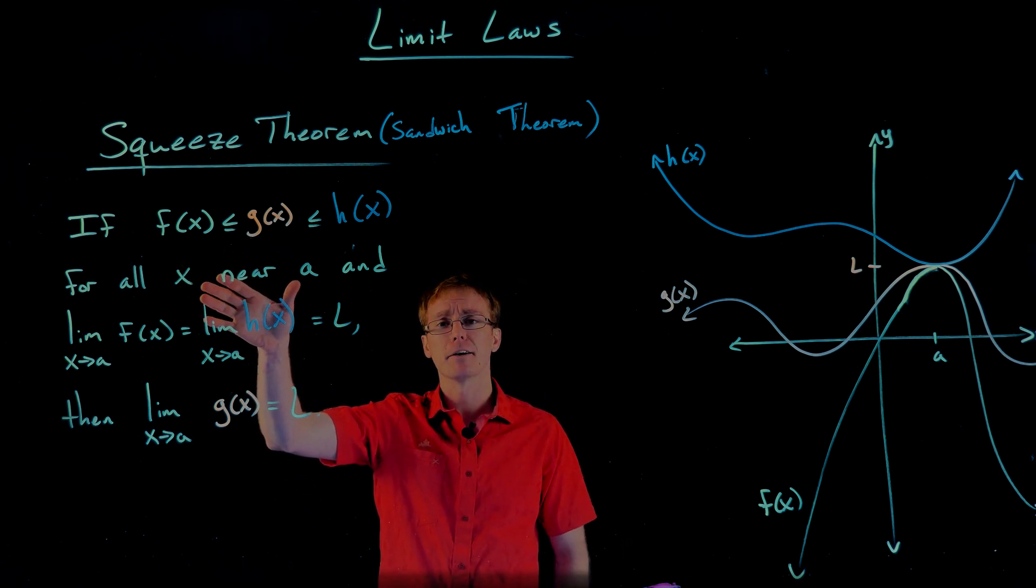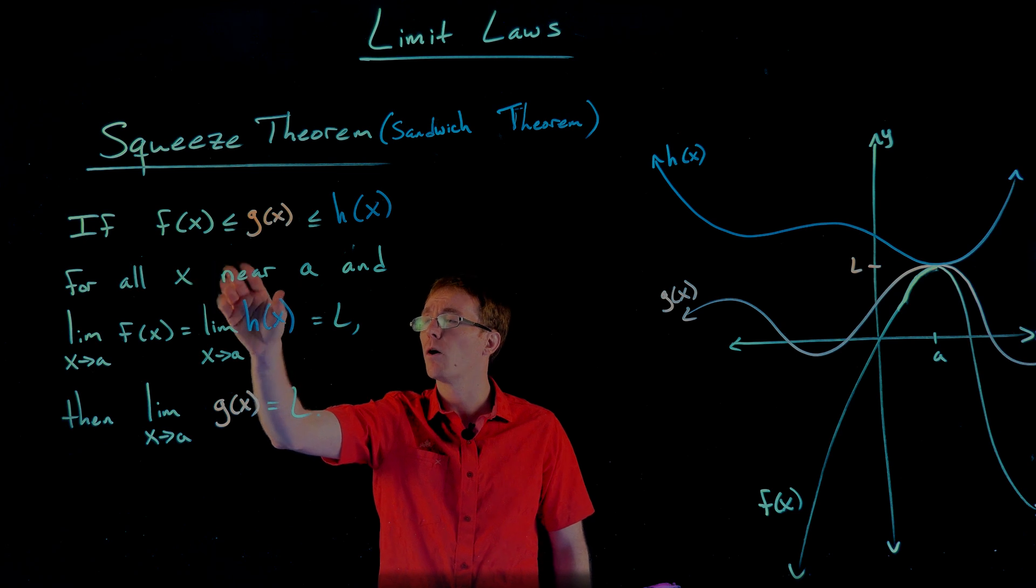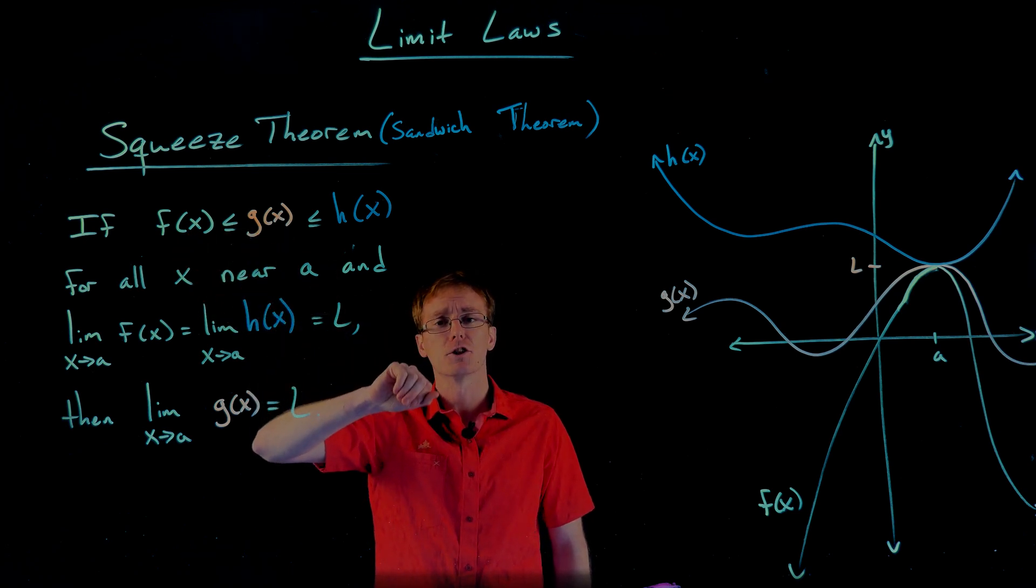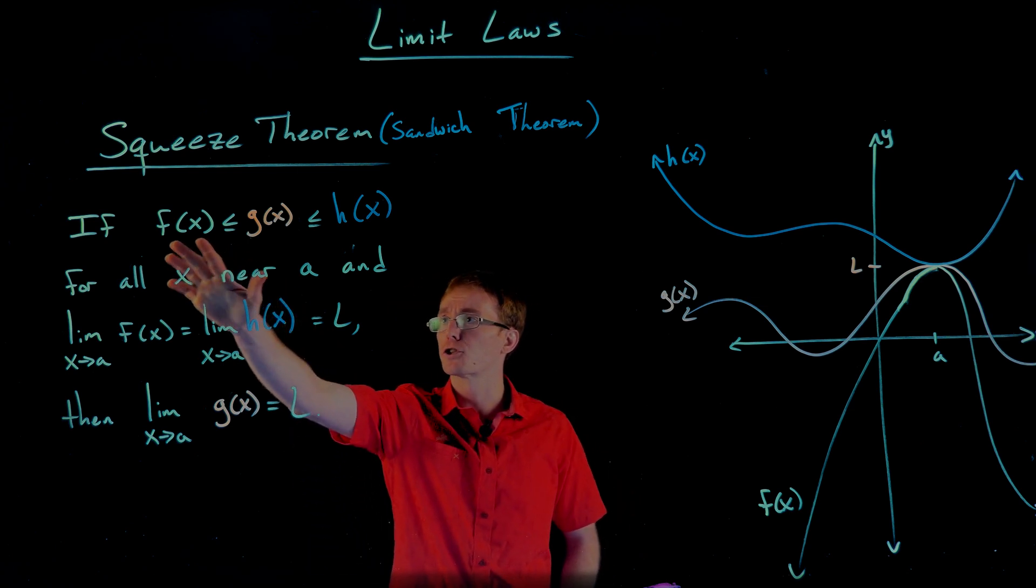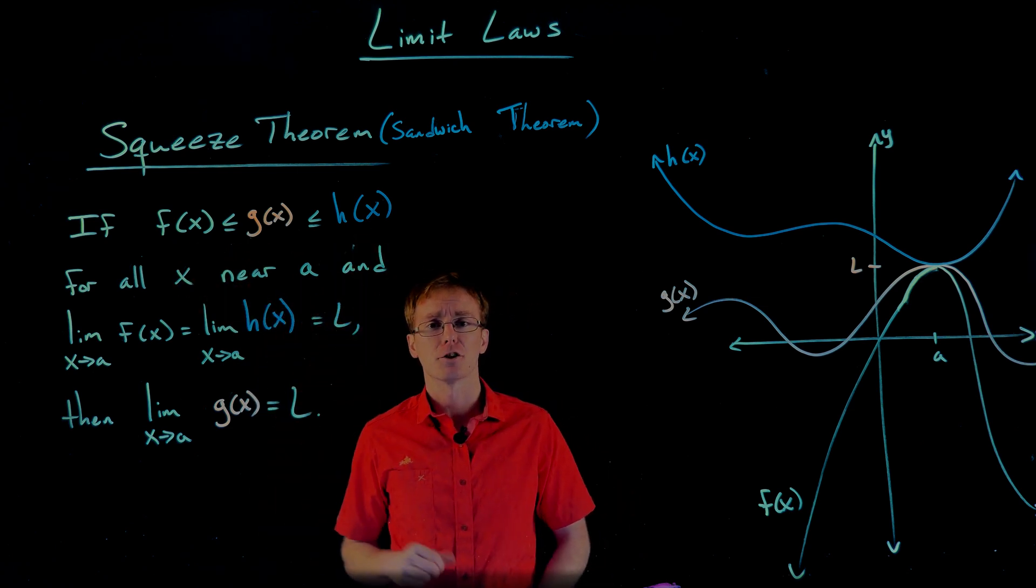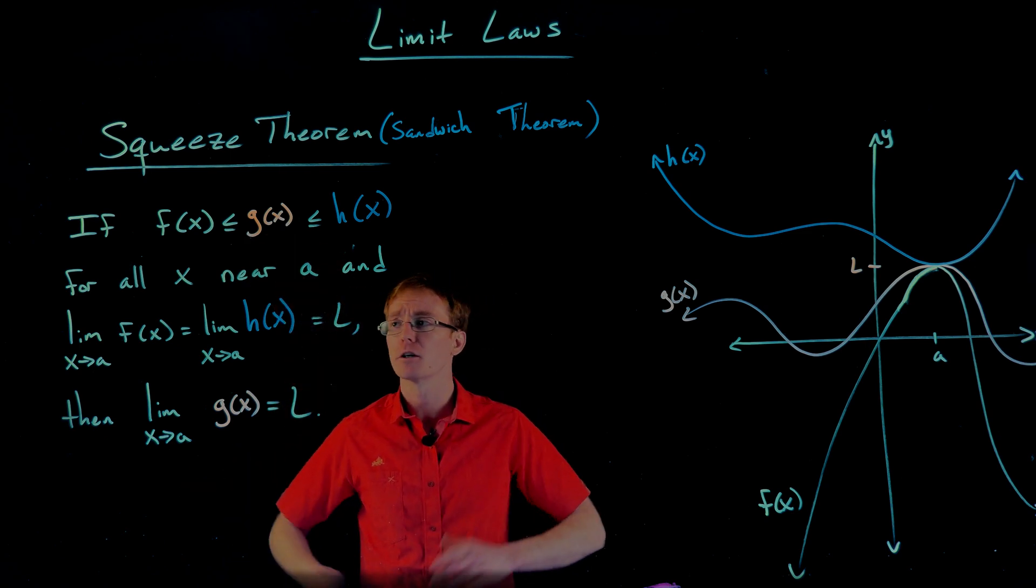If we have three functions we're comparing here, and they all satisfy this inequality, that f(x) ≤ g(x) ≤ h(x). So think of f as your smallest function, h as your biggest function, and g as your middle function.